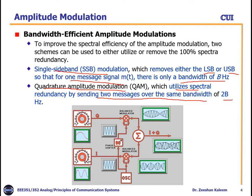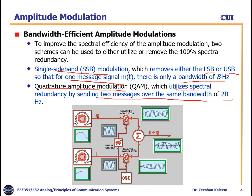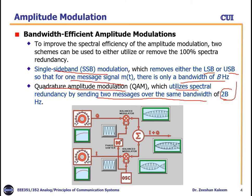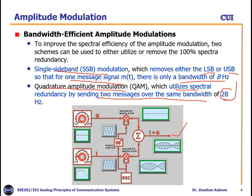In QAM, two messages are transmitted using in-phase and quadrature components — the same carrier frequency but different phase. One message is transmitted on the cosine and the other on the sine wave, allowing simultaneous transmission of two messages over bandwidth 2B. You can see the QAM block diagram here; this is the Q component and this is the I component, combined as I plus Q.